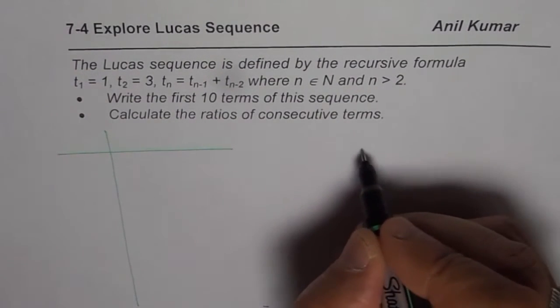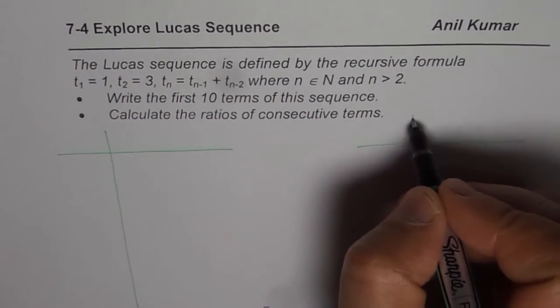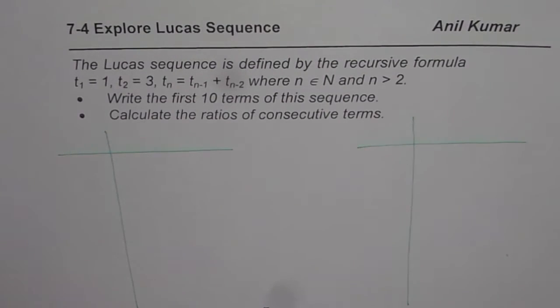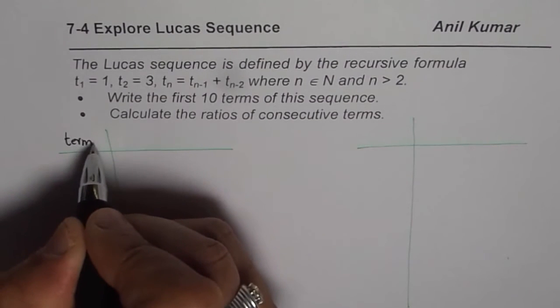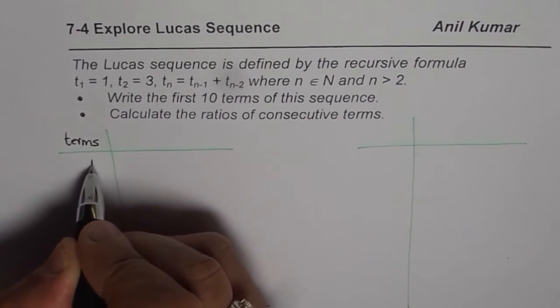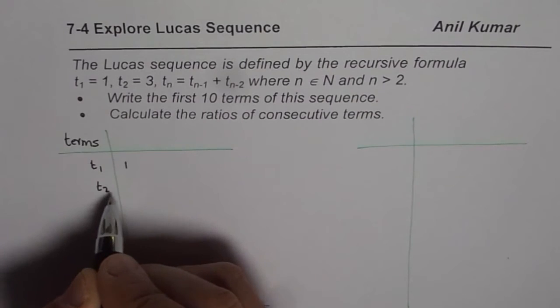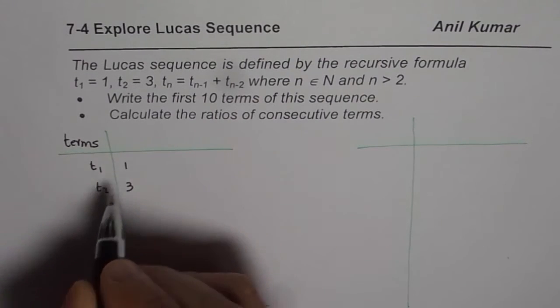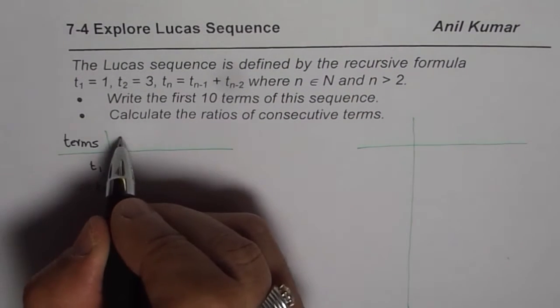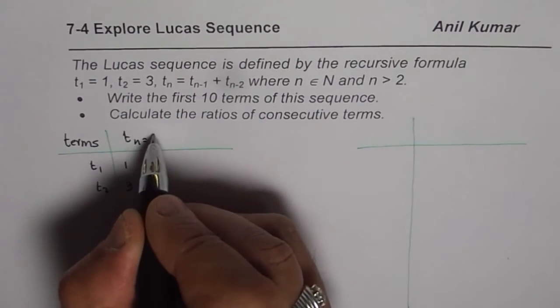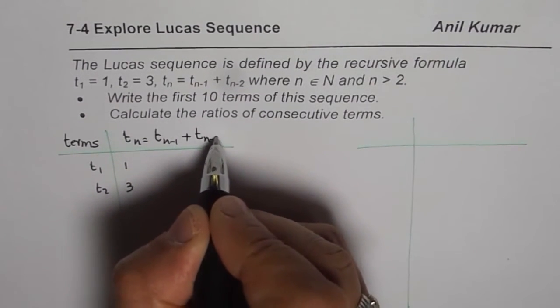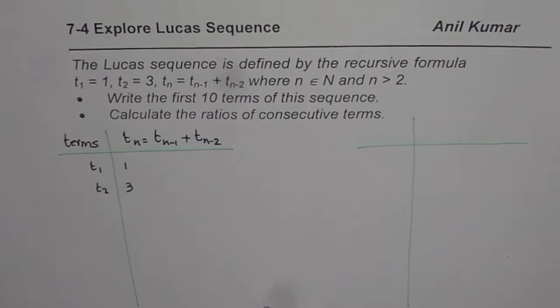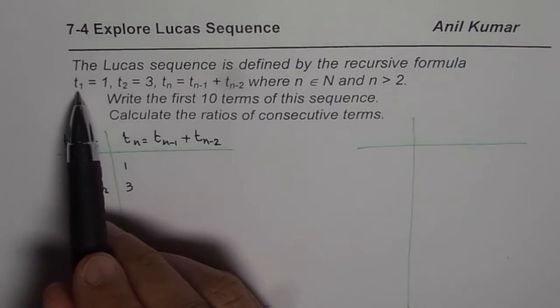We need to write 10 terms, so I will write 5 on this side and 5 on the other side. So let us say these are the terms for us. We already know that t1 is 1 and t2 is 3 for us. The formula is tn equals tn minus 1 plus tn minus 2, just as we have Fibonacci series. Same formula we have, except for the terms are different.